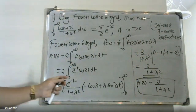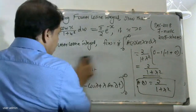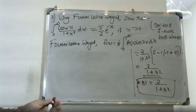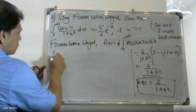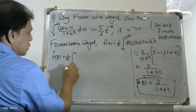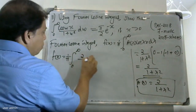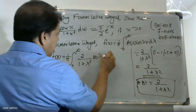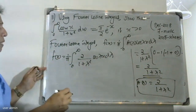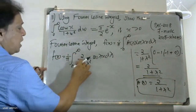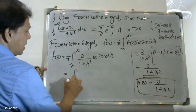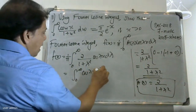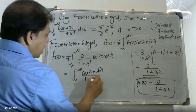Substituting A(λ) into the Fourier cosine integral formula: f(x) = (1/π) ∫₀^∞ [2/(1 + λ²)] cos(λx) dλ. So the integral from 0 to infinity of cos(λx)/(1 + λ²) dλ equals π · f(x).